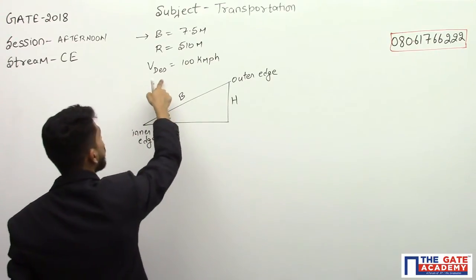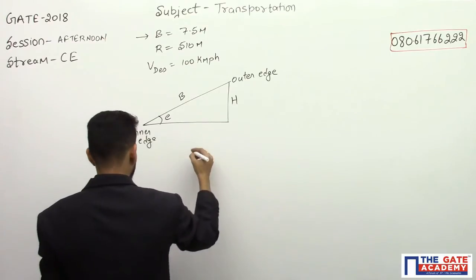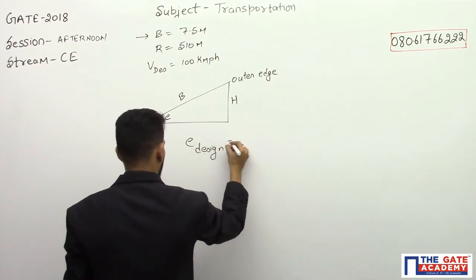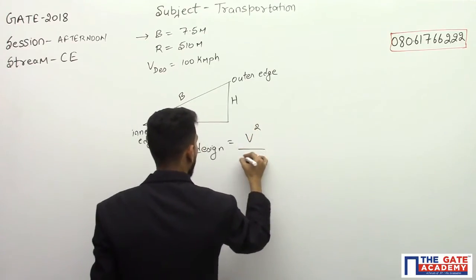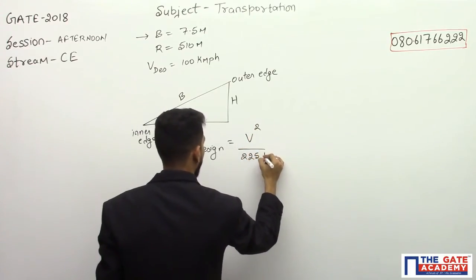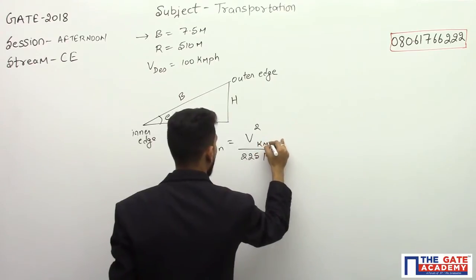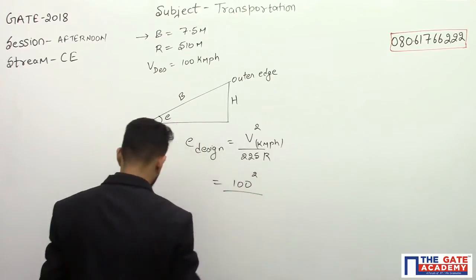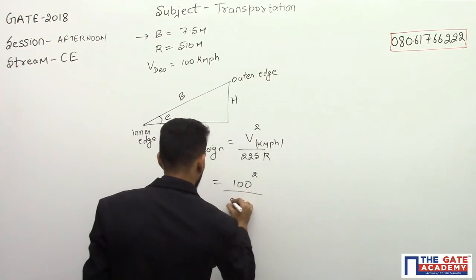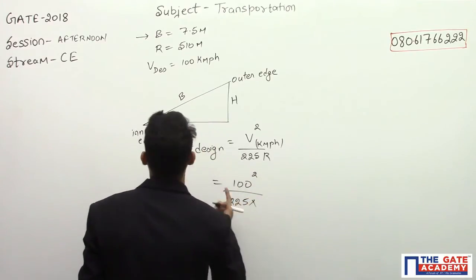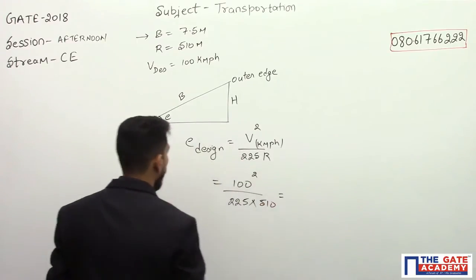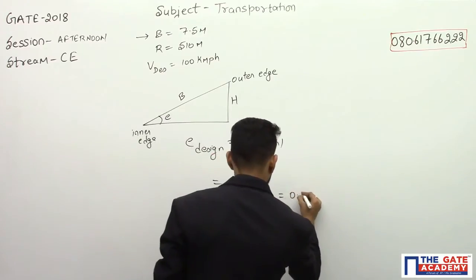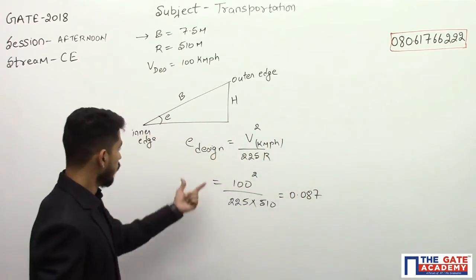We know that for a design speed, e_design is equal to V² divided by 225R. This V is in kmph. So it is 100² divided by 225 into R value 510. So this comes out to be 0.087.